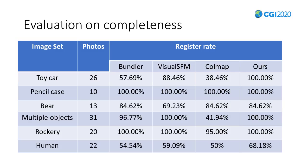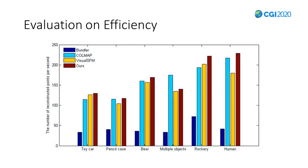Statistically, we investigate the register rate, by which we mean the camera positions actually being calculated divided by the total number of photos in the image set. We can see that we hold the first place in all image sets. Finally, we do an efficiency evaluation. The diagram on this slide shows the number of points constructed per second. We can see that our method outperforms others in most image sets, except for multiple objects.